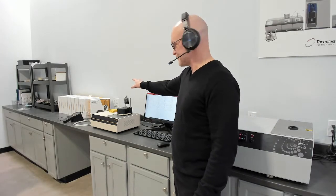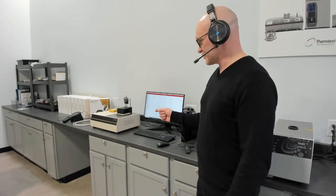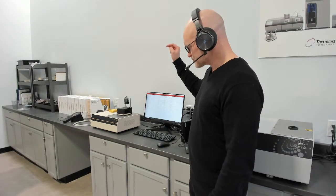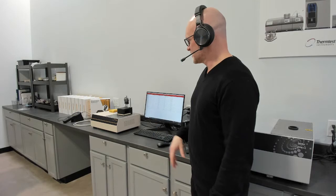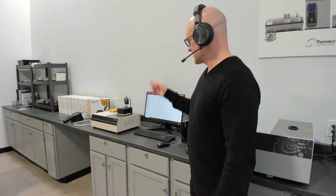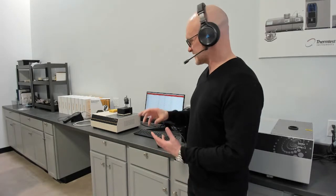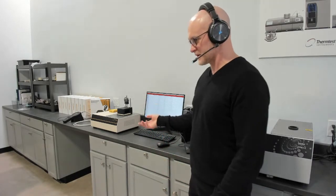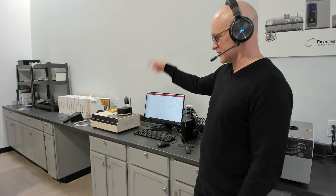And then down the end of the bench is our MP2, the baby brother to the MP1 which is measurement platform. There's a series of primary purpose sensors. So that means design for use. Transient plane source for doing single-sided testing. Transient hot wire for liquids. Transient line source for soils, etc.